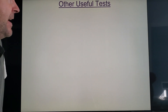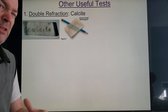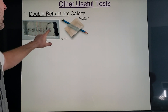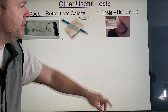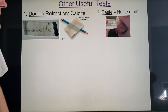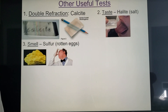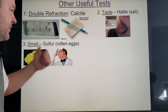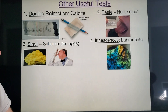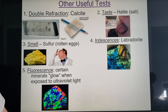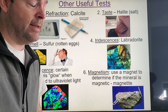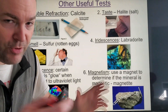There are also other useful tests, though they're specific to only a few minerals. Double refraction bends light twice. Some minerals taste salty — like halite — though in lab we won't be tasting minerals unless it's a freshly broken piece. Some are smelly, like sulfur, which smells like rotten eggs. Some minerals will iridese or fluoresce under black light. And some are naturally magnetic — you can do a quick paperclip attraction test for that.